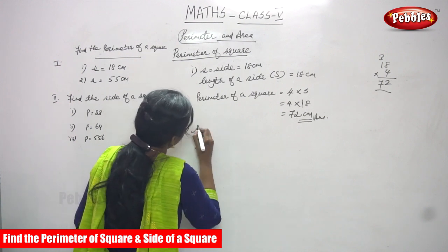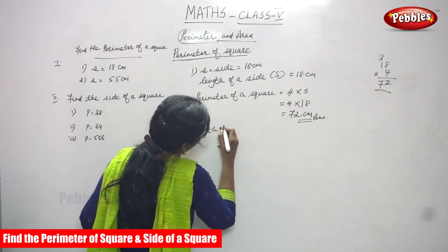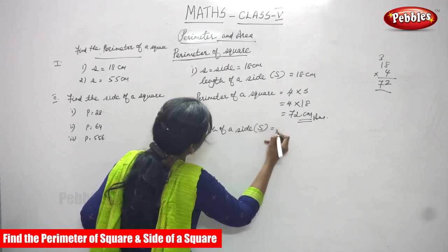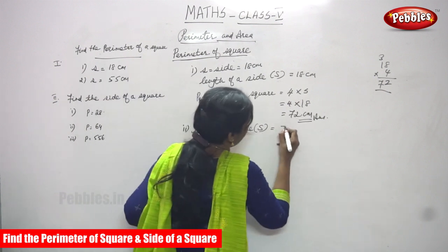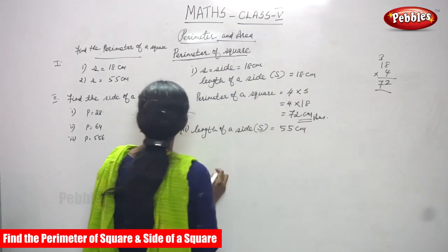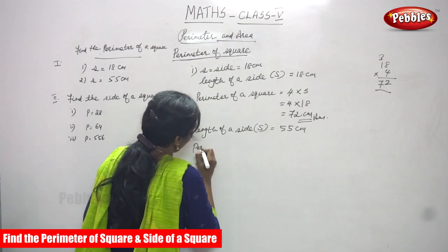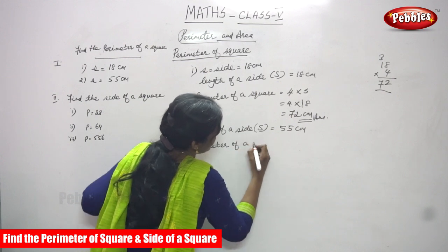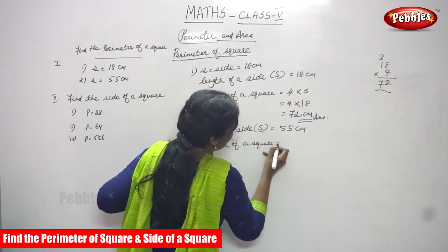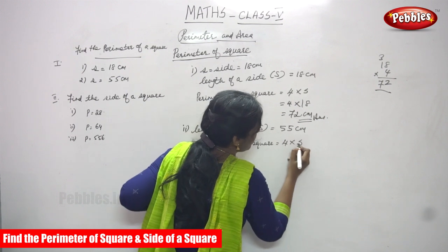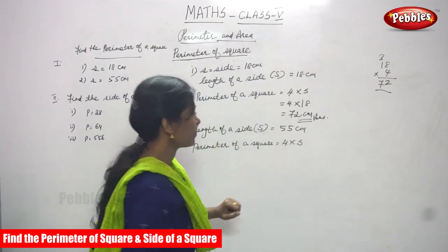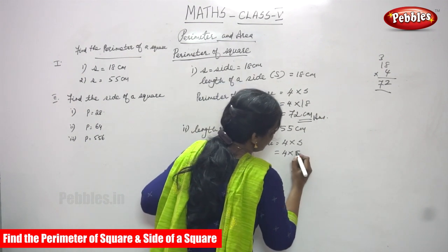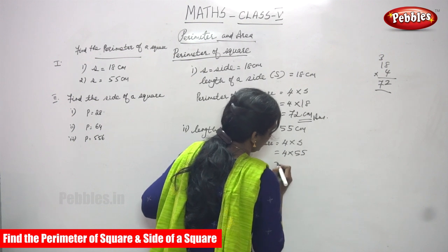The next sum. Again, length of the side — length of a side — that means S is equal to 55 cm. Now, find the perimeter of a square. You must write the formula: perimeter of a square is equal to 4 into length of the side, that means 4 into S. In that place, you have to substitute the value of side. 4 into 55.